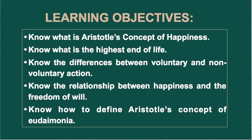After going through this unit, you will be able to know what Aristotle's concept of happiness is, what is the highest end of life, you will be able to know the differences between voluntary and non-voluntary action. Again, you will be able to know the relationship between happiness and the freedom of will, and you will be able to know how to define Aristotle's concept of eudaimonia.